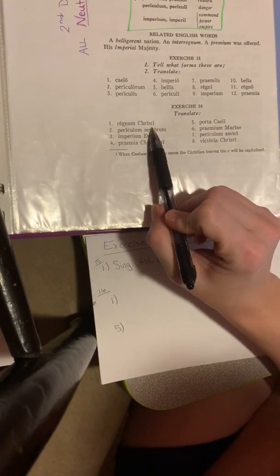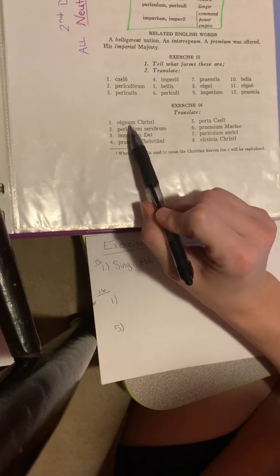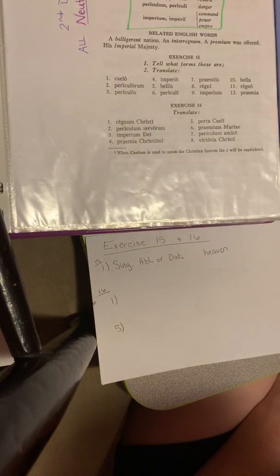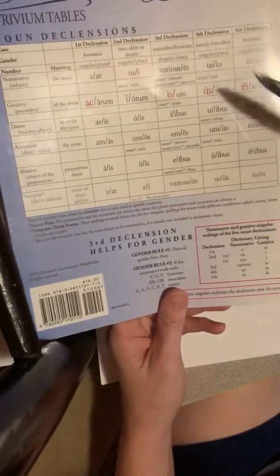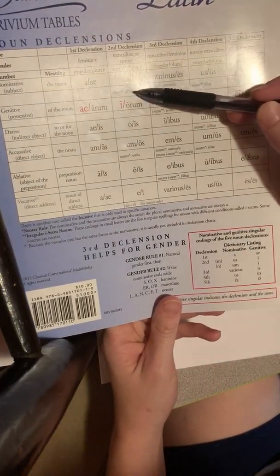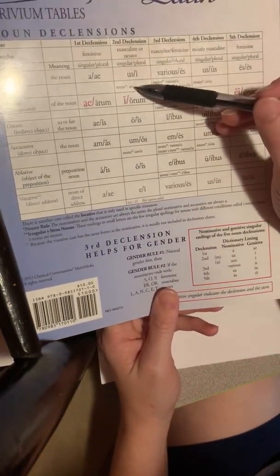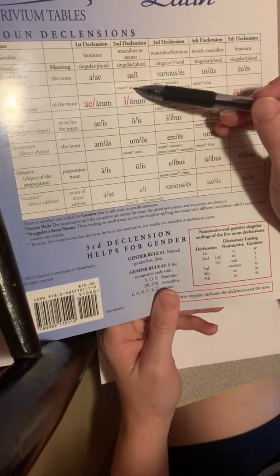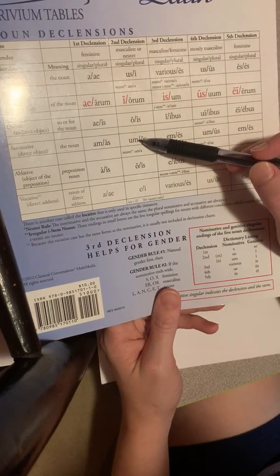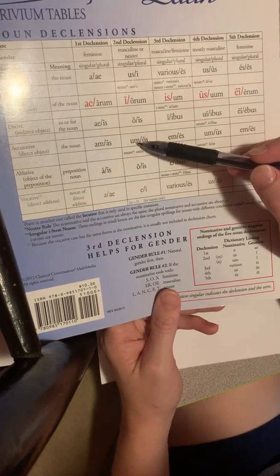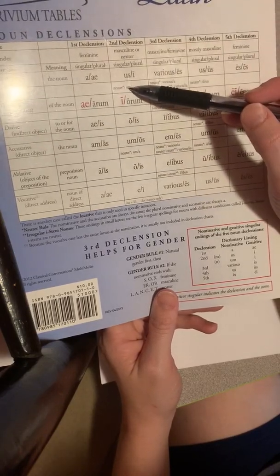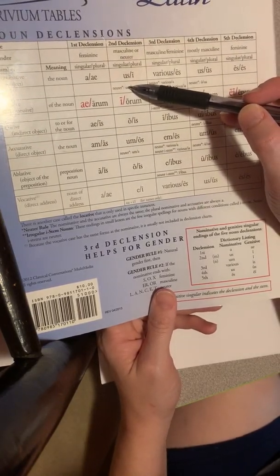Regulum Christi. Regulum ends in this U-M. And if you look down, because regulum is one of our new words, it is a neuter. It could either be our singular subject, or it could be accusative. I'm going to make the assumption that it's a subject. We can always go back and change it if we're incorrect.